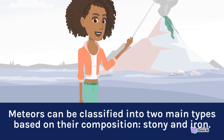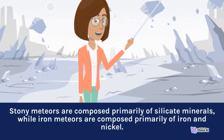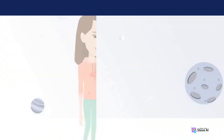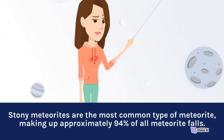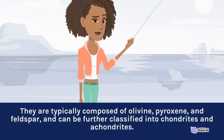Meteors can be classified into two main types based on their composition: stony and iron. Stony meteors are composed primarily of silicate minerals, while iron meteors are composed primarily of iron and nickel. Stony meteorites are the most common type, making up approximately 94% of all meteorite falls. They are typically composed of olivine, pyroxene, and feldspar, and can be further classified into chondrites and achondrites.